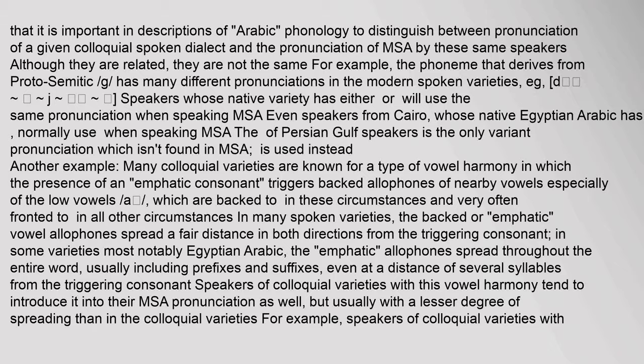Modern Standard Arabic has six pure vowels, with short a, u, i, and corresponding long vowels, plus two diphthongs, 'aj' and 'aw'. The pronunciation of the vowels differs from speaker to speaker in a way that tends to reflect the pronunciation of the corresponding colloquial variety. The most noticeable trend is the differing pronunciation of 'a' and 'ā', which tend towards fronted in most situations but backed in the neighborhood of emphatic consonants. The consonants triggering emphatic allophones are the pharyngealized consonants: t, d, s, th, q, and r.